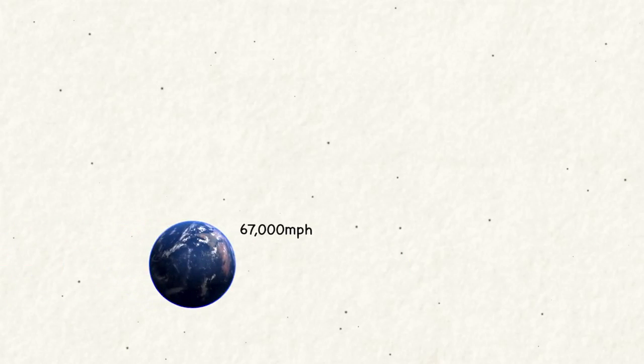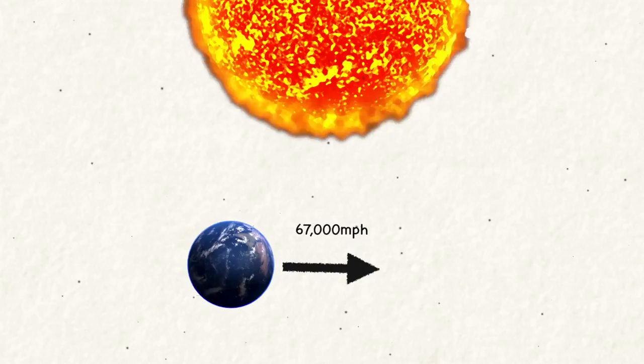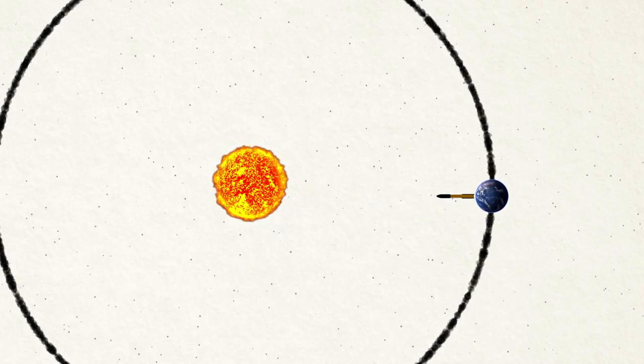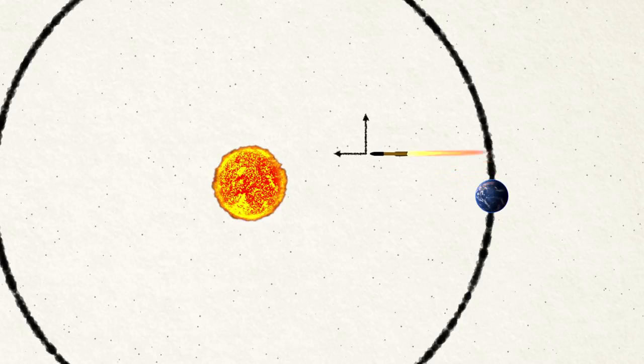Earth, and everything on it, is traveling very fast, about 67,000 miles per hour, in a direction that is basically always sideways relative to the Sun. If you launch a rocket from Earth straight toward the Sun, it won't lose that sideways speed, and so it will miss the Sun.